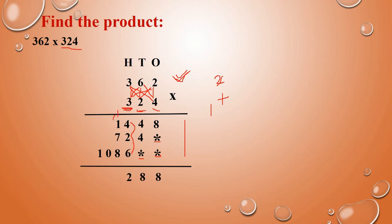Carry 1. So now: 1 plus 1 is 2; 2 plus 7 is 9; again 9 plus 8 is 17. So 17 means write 7, carry 1. Next, 1 plus 0 is 1; the next digits — just 1 — leave it. So 1. So the answer is 1,17,288.